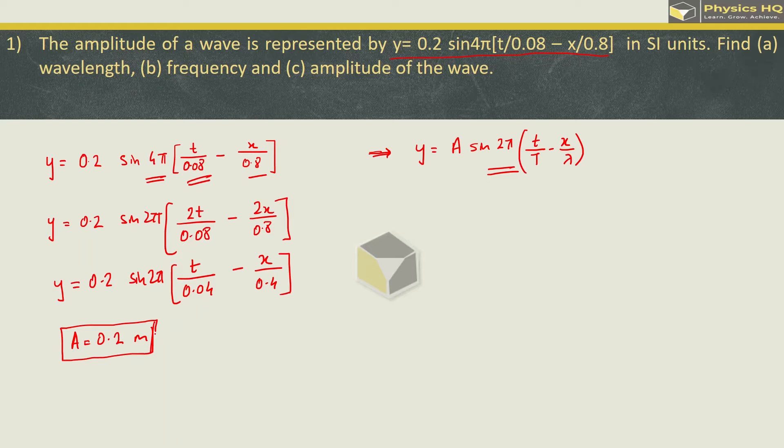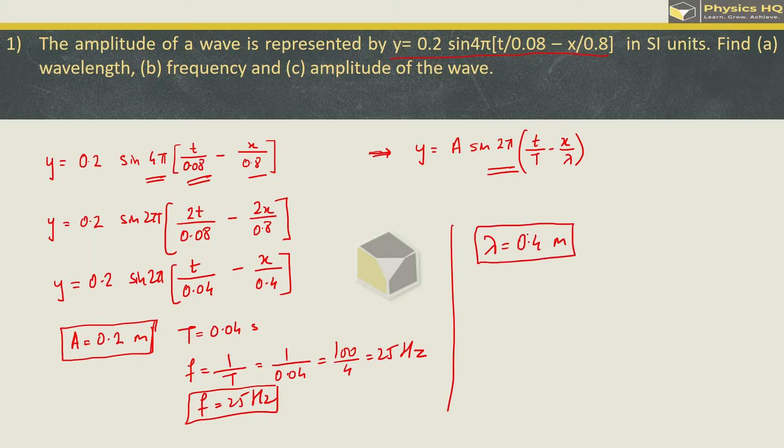Next, what we find out on comparison is capital T value here is 0.04 second. Frequency is 1 upon time period capital T. So this is 1 upon 0.04, which is 100 by 4, which equals 25 Hertz. So we got frequency of 25 Hertz. Lastly, wavelength. So wavelength, we got lambda, which is directly 0.4 meter. I hope you understood.